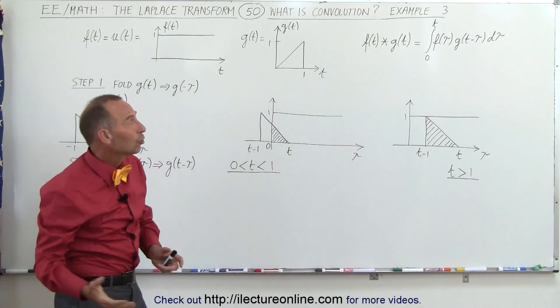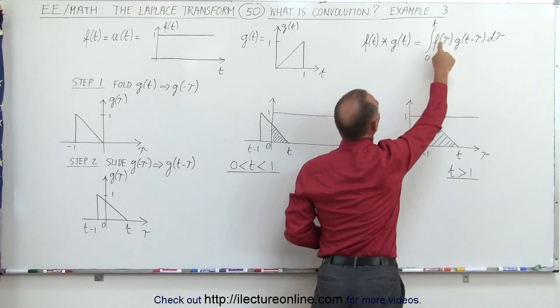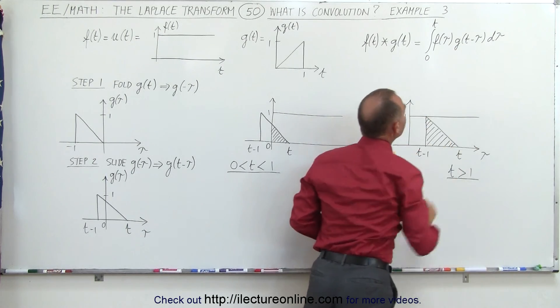Now, the convolution, the equation, is that f convolved with g is equal to the integral from 0 to t of f of tau, the dummy variable, times g of t minus tau, d tau.